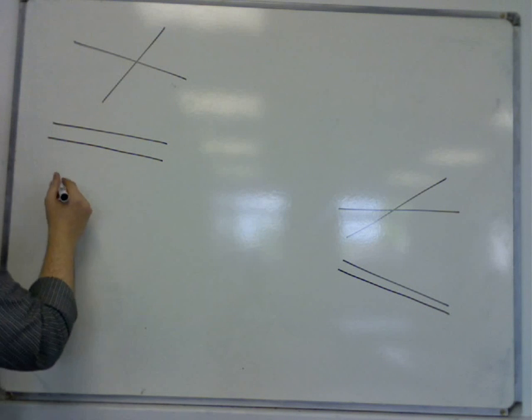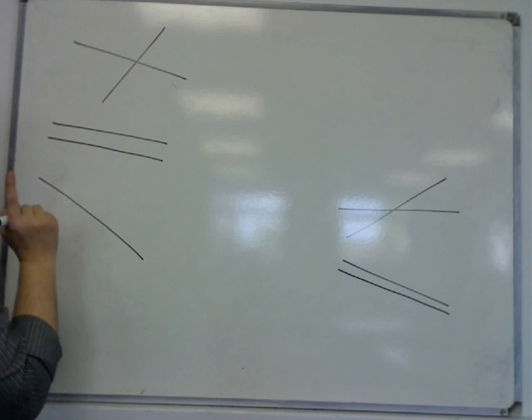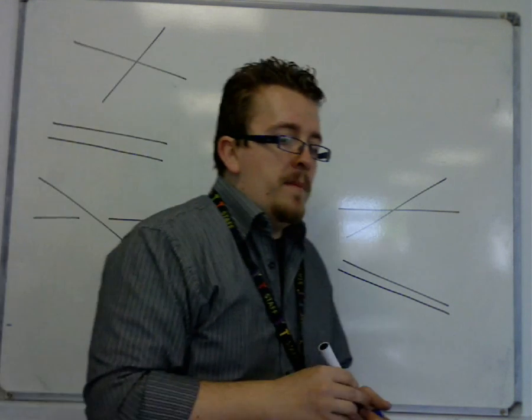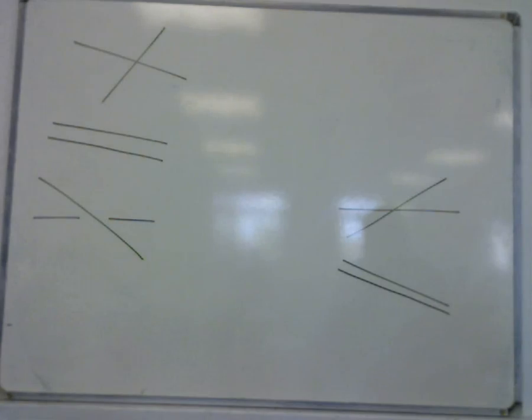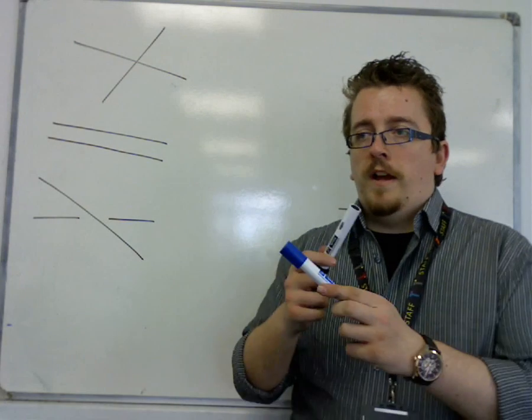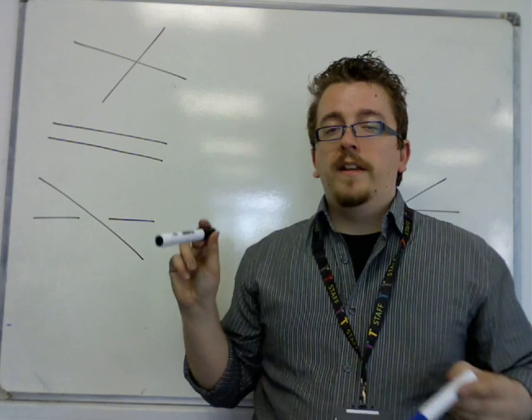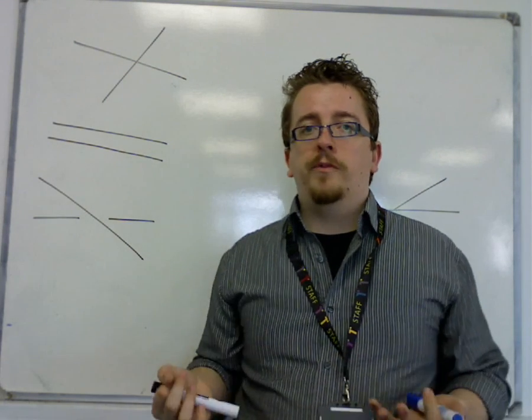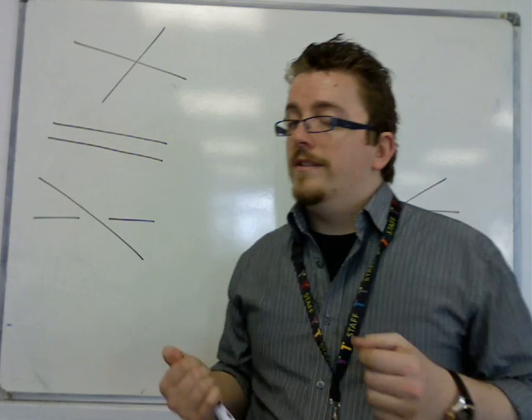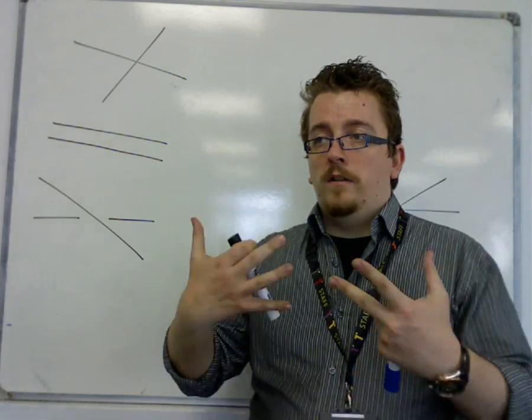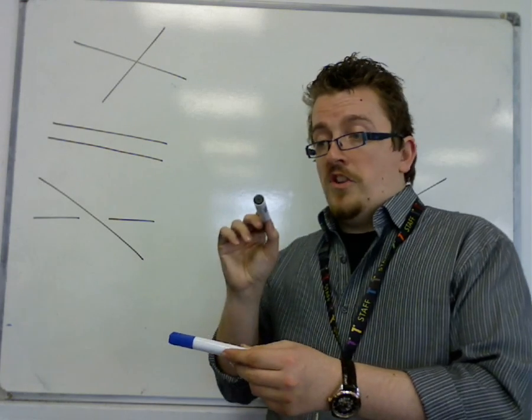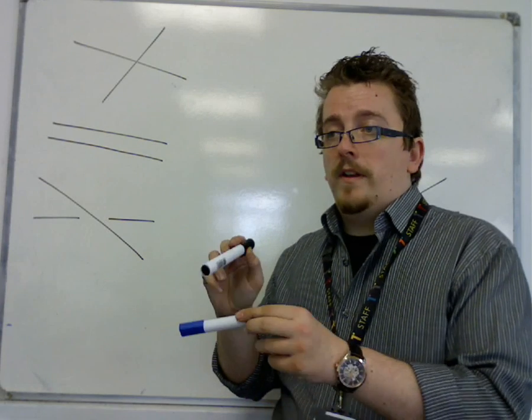Or you can have two lines that aren't parallel but they just don't cross each other. And you can imagine that, in the grand scheme of things, if you've got two lines that are traveling through three-dimensional space, more often than not, you're going to have two lines that aren't going to have the same direction vector, so they're not going to be parallel.